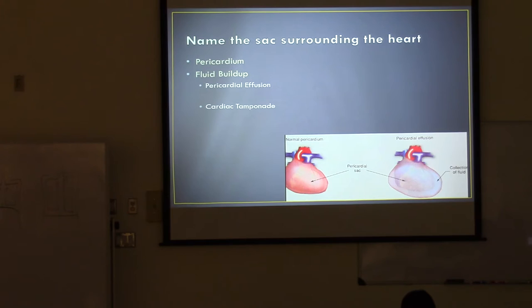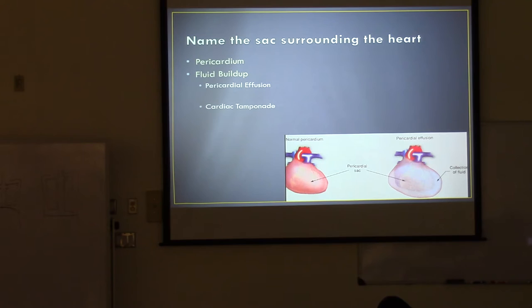So there's a sac around the heart called the pericardial sac. There are different situations where fluid will accumulate in the pericardial sac. When fluid accumulates in the sac, it will compress the heart. And when it compresses the heart, there will be less blood coming into the heart to fill it, and therefore less blood will leave the heart when it contracts.